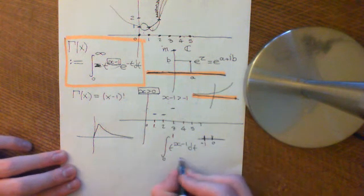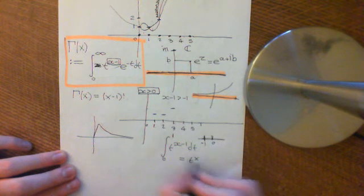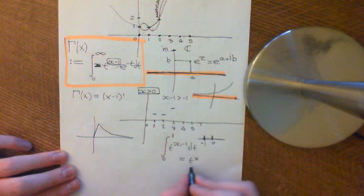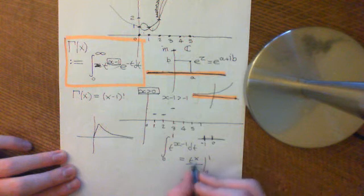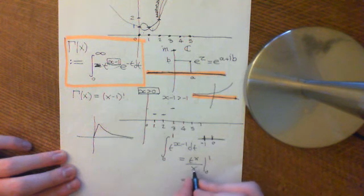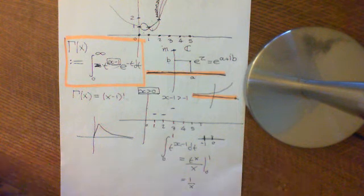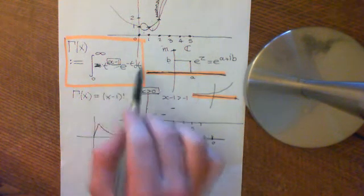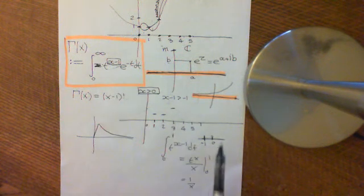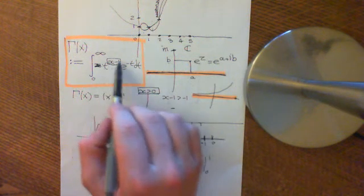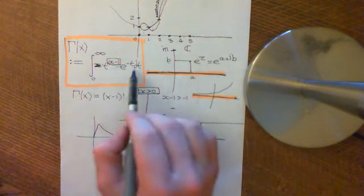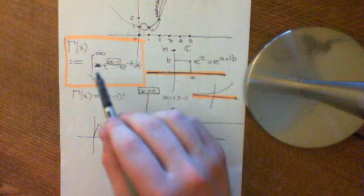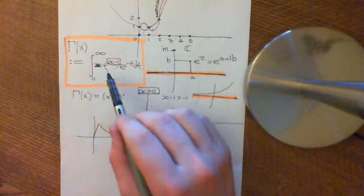So this integral will be finite. You raise the power by one, divide through by the new power, and evaluate between zero and one. What you get is one over x minus zero to the power of x, which is zero divided by x — still just zero — so you get one over x, which is a finite value. That's the intuition for why this integral is defined: even though the integrand blows up as t approaches zero, the integral doesn't — you can still integrate over it.